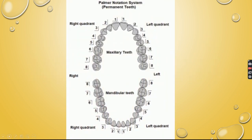Looking at the image, you can easily understand: 1 to 8 is the right quadrant for the Palmer notation system in the maxillary arch, and 1 to 8 in the left quadrant of maxillary teeth. One to 8 represents the mandibular left quadrant, and another 1 to 8 represents the mandibular right quadrant.